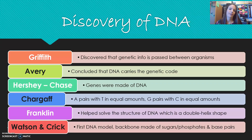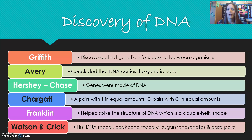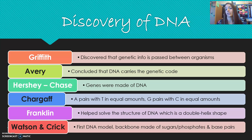When we're talking about the discovery of DNA, there are several really important people you need to be aware of. The people listed below are in order of how their discovery led to the ultimate model of DNA. We'll start with Griffith, who essentially discovered that genetic information is passed down between organisms — offspring get their genetic information from their parents. Avery then concluded that DNA carries that genetic code.